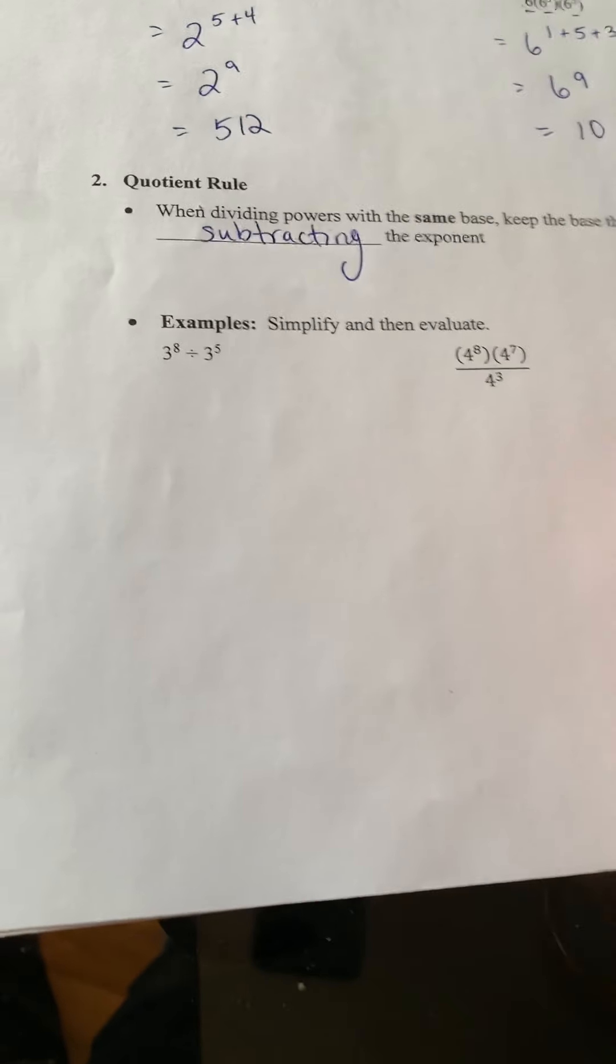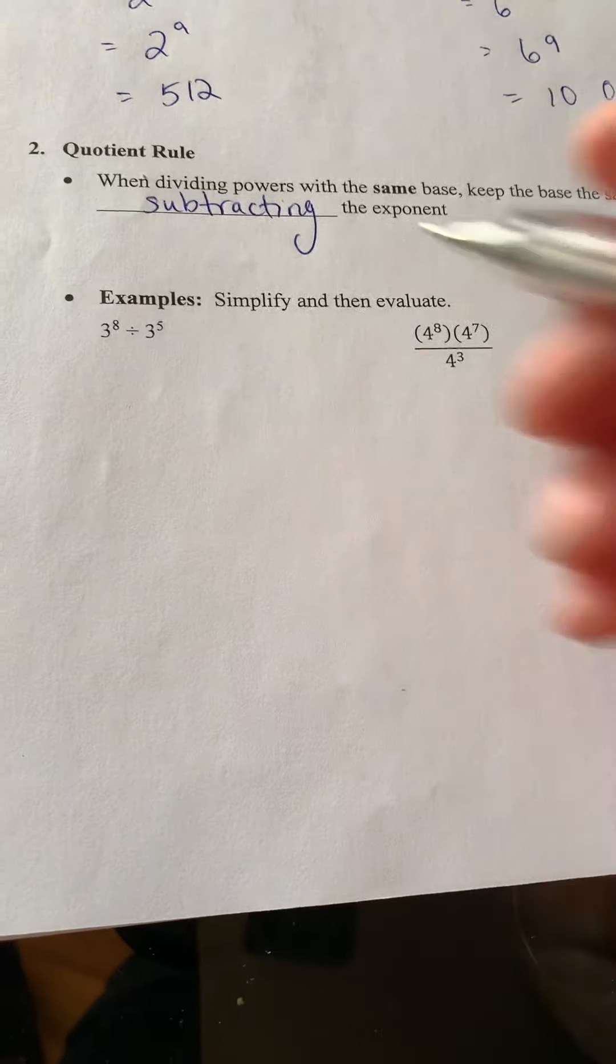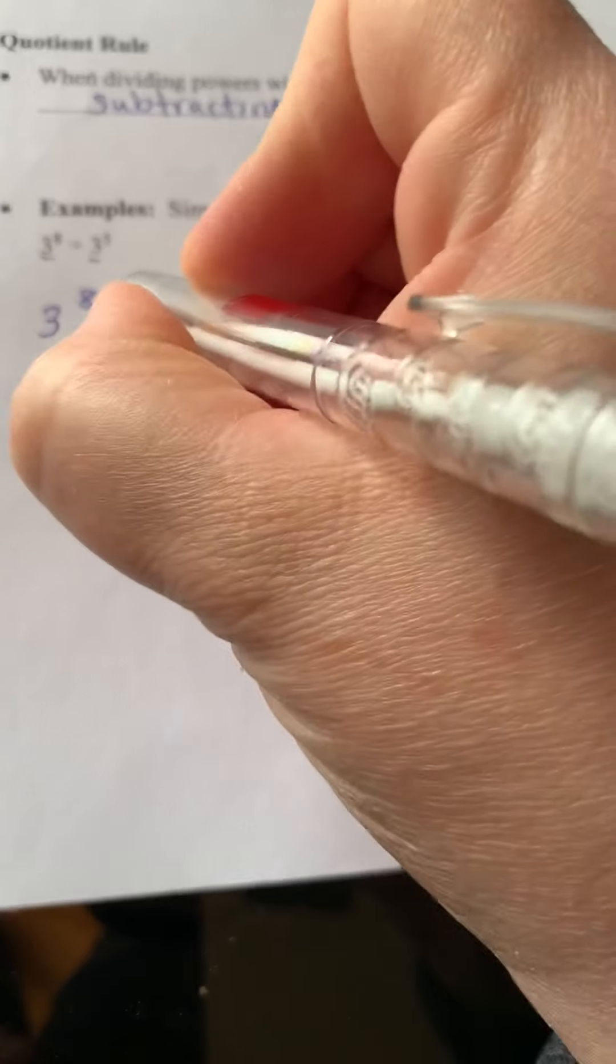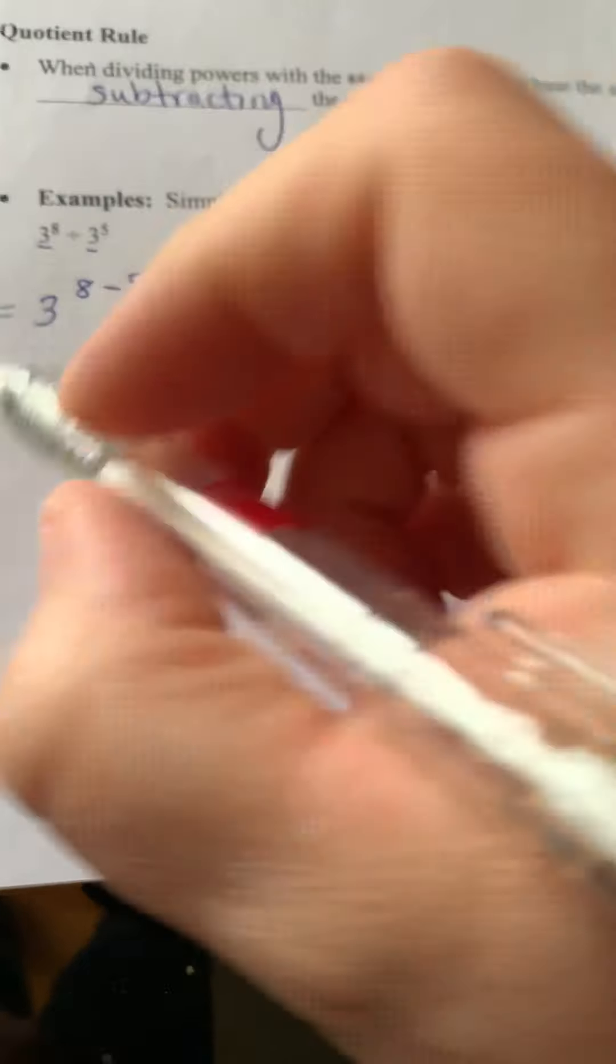All right. So here we go again. Simplify, then evaluate. So 3 to the 8 divided by 3 to the power of 5. The bases are the same. I'm going to subtract the exponents. So I get 3 to the power of 3, which works out to be 27.